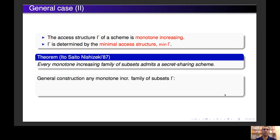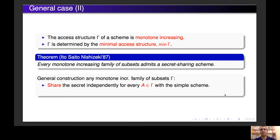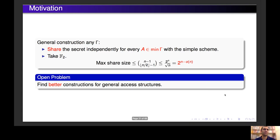Given a monotone increasing family of subsets gamma, what we can do is share the secret independently for every subset A in gamma with the simple scheme we saw before — that is, we give a random element to each participant, except for the last participant in A who will receive S minus the sum of the random elements. We can do it slightly better by sharing the secret independently only for those subsets in the minimal access structure. Now we analyze the share size of this construction. If we want to share a secret that is just one bit, we will take the previous scheme with F_p = F_2. Since each participant may be in up to (n-1) choose (n/2 - 1) minimal authorized subsets, we have an upper bound on the max share size of 2 to the n minus small o(n).